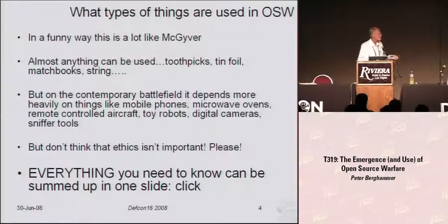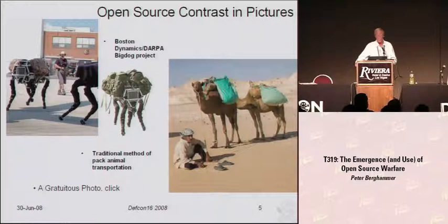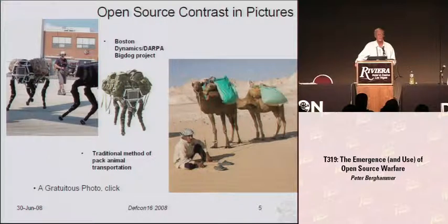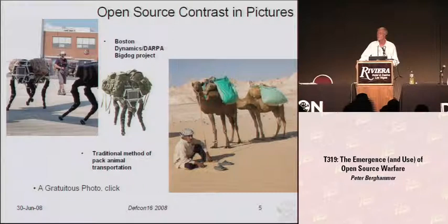To get us started, I'll show one slide that tells you everything you need to know about open source warfare — funny in a way, tragic-comic in another, and deadly serious in the most fundamental way. On the left is the Big Dog project done by DARPA. The center picture was done by a company called Boston Dynamics, working with DARPA to provide a type of pack mule automation system. It's a very sophisticated robot that works on four legs, walks around, carries packs. It's an adaptation of probably one of the oldest forms of military transportation known to man — a camel.